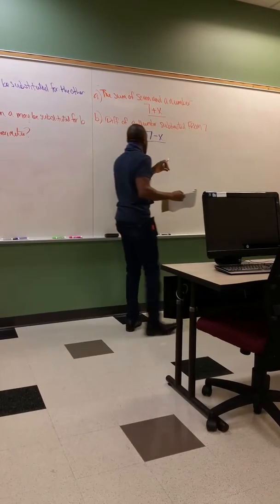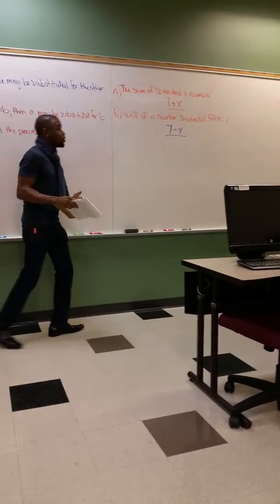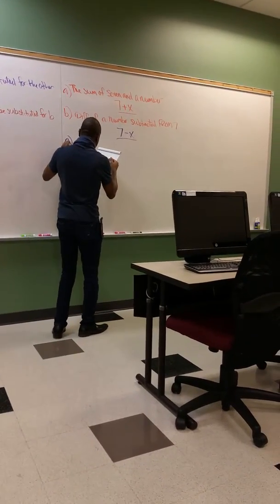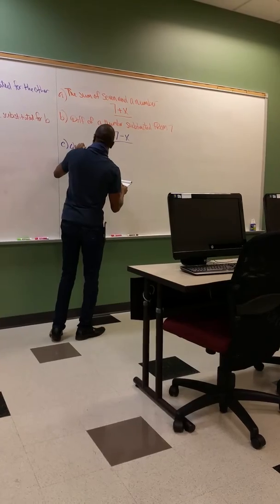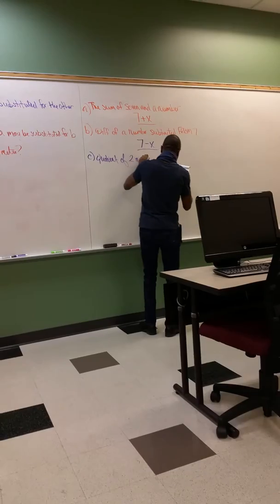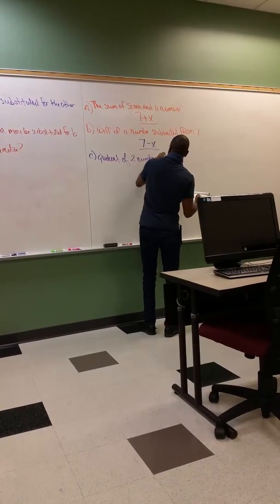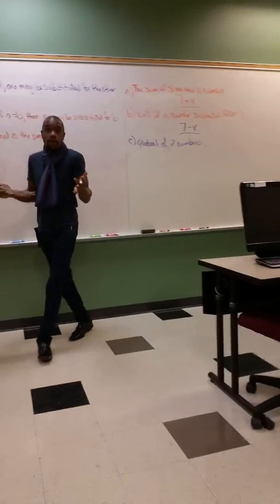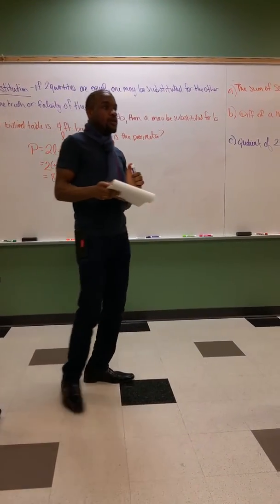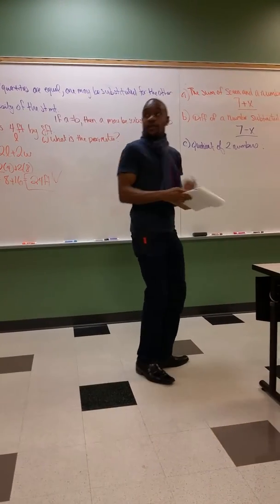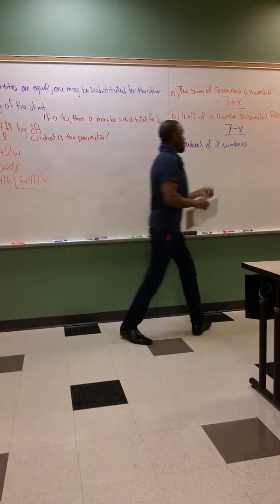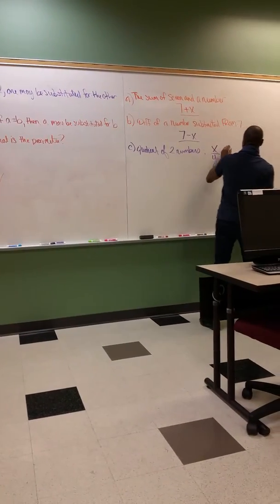Some people have mad issues with trying to convert English to math in word format. Our next one: quotient of two numbers. What does quotient mean? Don't name your kid quotient either. Is it division? Division. It doesn't matter what my two numbers are — random. X over Y. M over N.